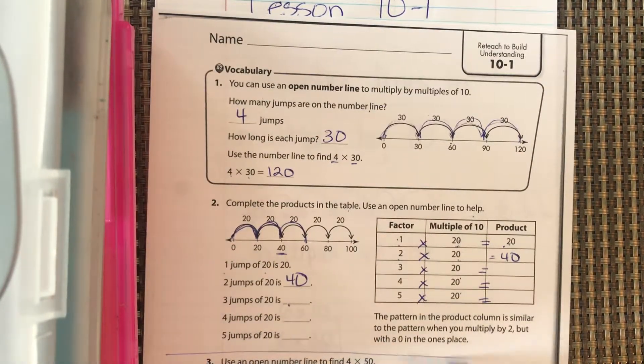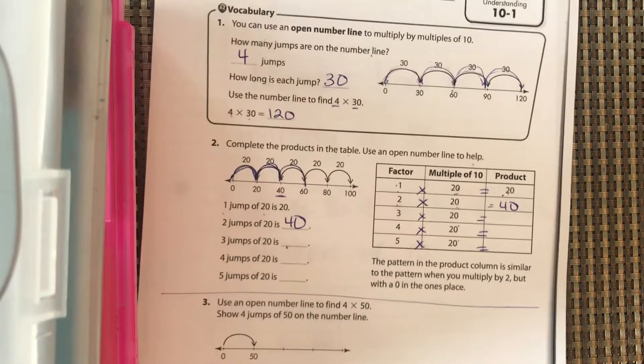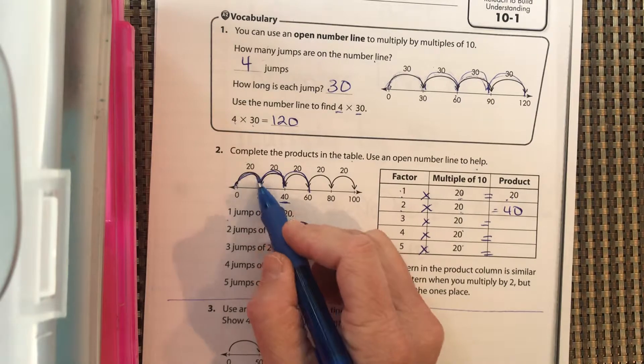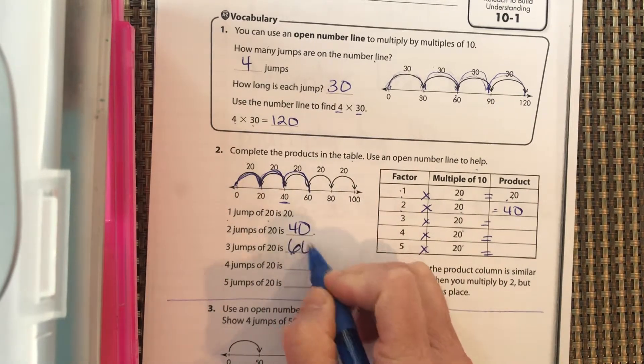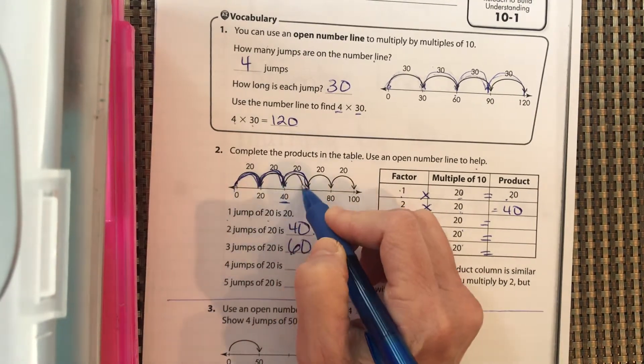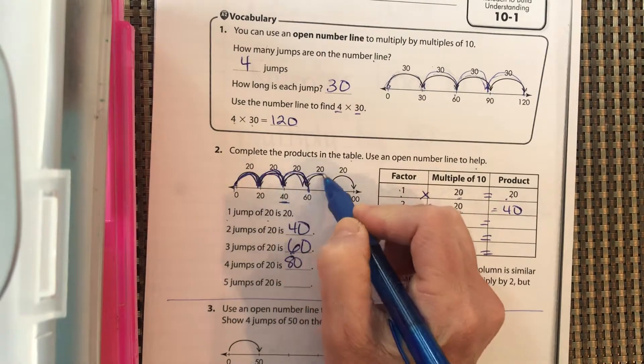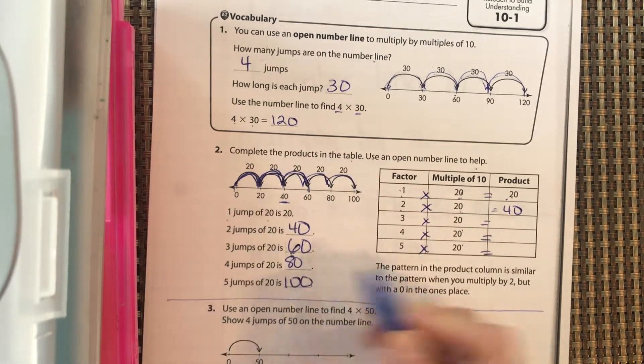3 jumps of 20 should be, you fill in the rest of these. Okay, so pause it and fill up to there. Okay, 3 jumps of 20, 20, 40, 60. 4 jumps, 20, 40, 60, 80, and 5 jumps. 20, 40, 60, 80, 100.